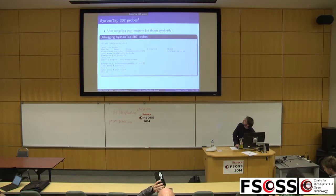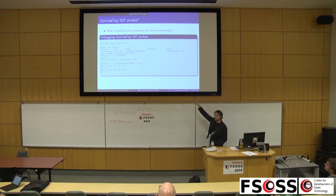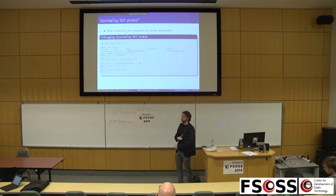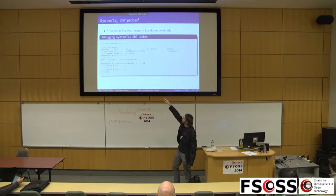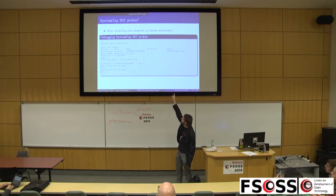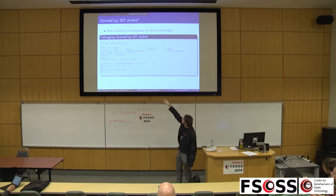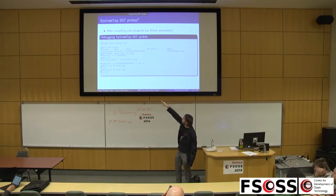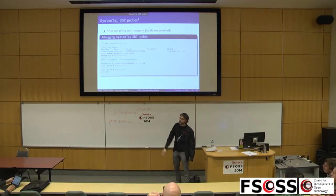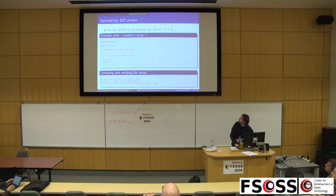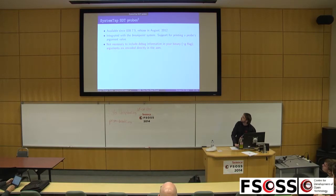Here is an example debug session. I compiled my program without dash-G. I'm using 'info probes' to list the probes — GDB tells me I have one probe called 'my_probe' with provider 'example_stap'. I put a breakpoint on that probe, run the program, the breakpoint is hit. I asked GDB how many arguments that probe had — one. And I printed the argument, which is 10.